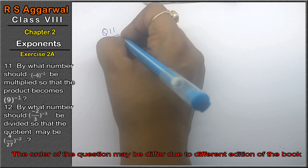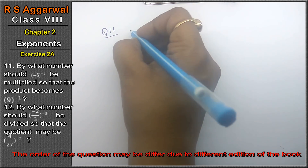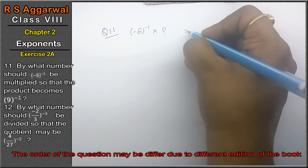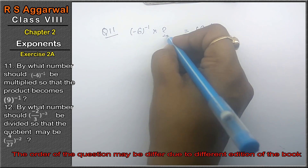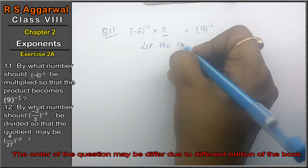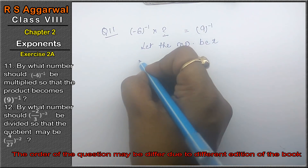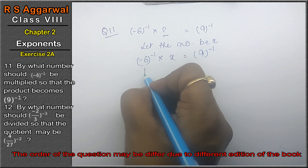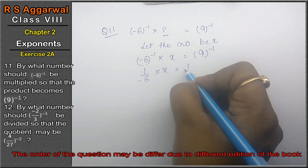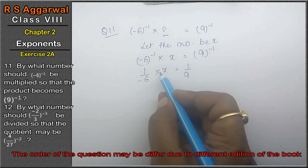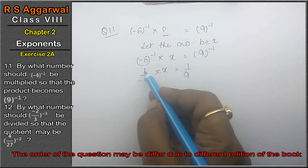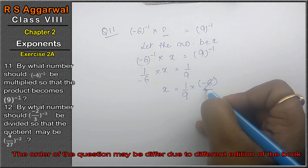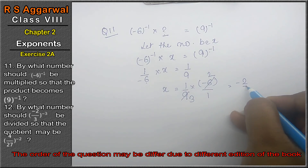By what number should minus 6 ki power minus 1 be multiplied so that it will get 9 ki power minus 1? Yeh number hume nikalna hai, so let the number be x. Minus 6 ki power minus 1 into x equals 9 ki power minus 1. Ab, 1 upon minus 6 into x equals 1 upon 9. Toh, x equals 1 upon 9 into minus 6 upon 1. 3 nines are 27, 3 threes are 9. That means minus 2 upon 3 is the answer.